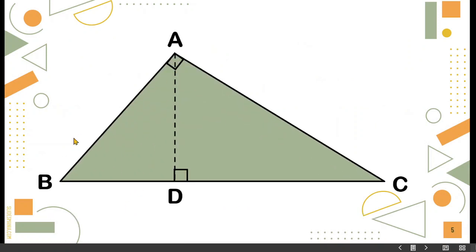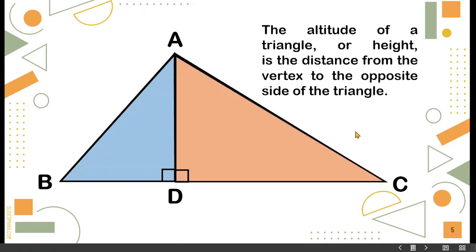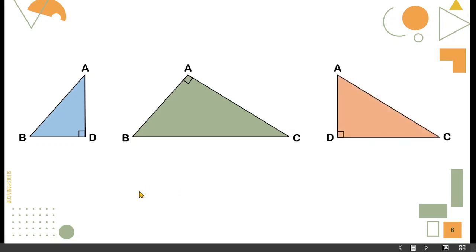If we have triangle ABC and the altitude is drawn to the hypotenuse — altitude AD — the altitude of a triangle or height is the distance from the vertex to the opposite side. The two triangles formed that are similar to each other are triangle DAB and triangle DAC. Triangle DAB is similar to triangle ABC and similar to triangle DAC.